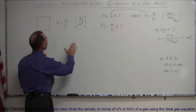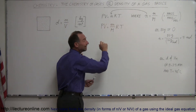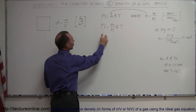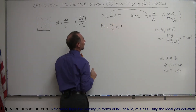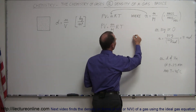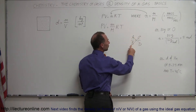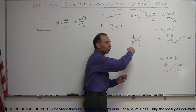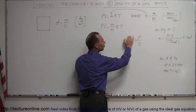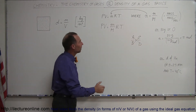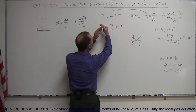We want to isolate density, which is mass divided by volume. Since we have mass and volume in this equation, we can rearrange it. When you have two fractions equal to each other — A/B = C/D — you can move things across the diagonal: D goes to the numerator on the left, B goes to the denominator on the right, and so forth. We can think of this as PV/1 = mRT/M, and move things across the diagonal accordingly.